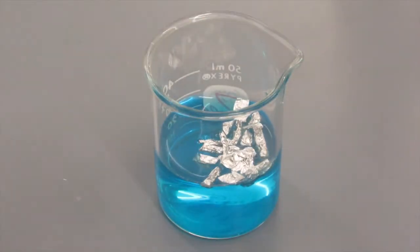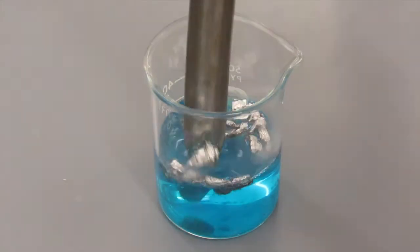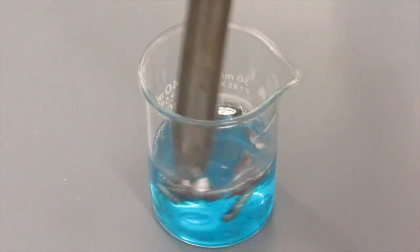The aluminum that we measured earlier is now poured into the copper chloride solution. You can see it quickly begins to react as the copper forms on the outside of the aluminum.